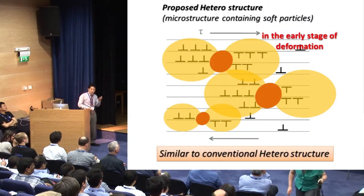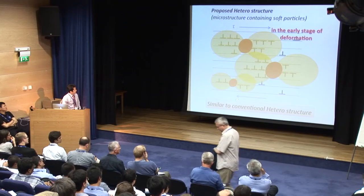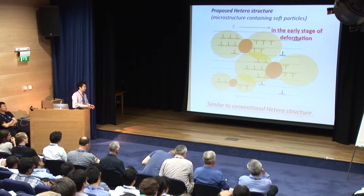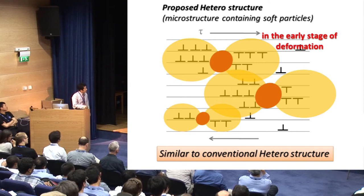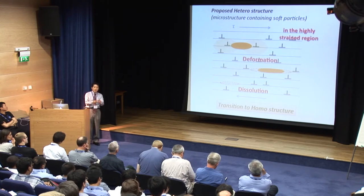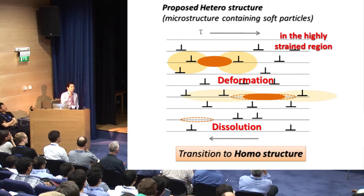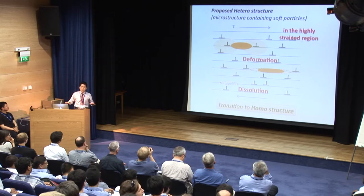As you know, the precipitation of copper causes precipitation hardening of steels. This means copper particles strongly interact with dislocations and prevent dislocation movement in the iron matrix, similar to the case of conventional heterostructure in the early stage of deformation. However, in the highly strained region, the copper particle is plastically deformed and elongated. It is guessed that the plastic deformation of the copper particle itself leads to relaxation of stress concentration at the interface, and the significant morphological change and sometimes dissolution may lead to disappearance of the strengthening effect by copper — similar to the case of homostructure.